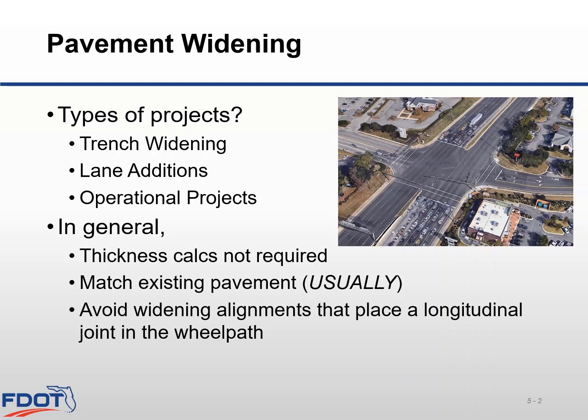There may be some projects where the existing pavement structure is something you don't particularly need or want to match. An example would be a case where the existing pavement is 12 inches thick due to numerous overlays, but the adjacent widening does not need to be that thick.